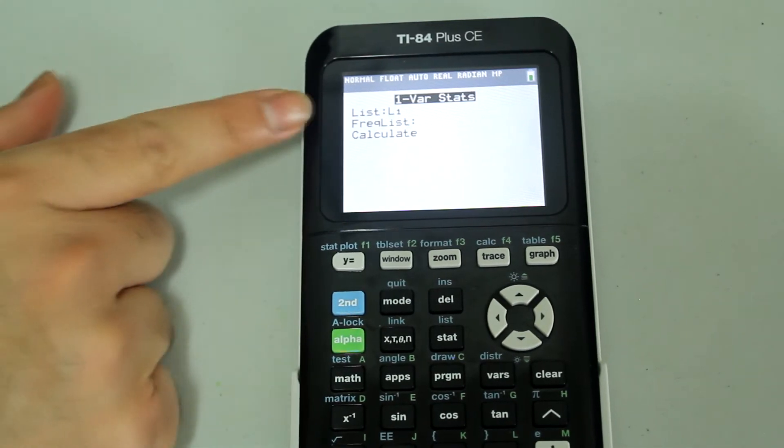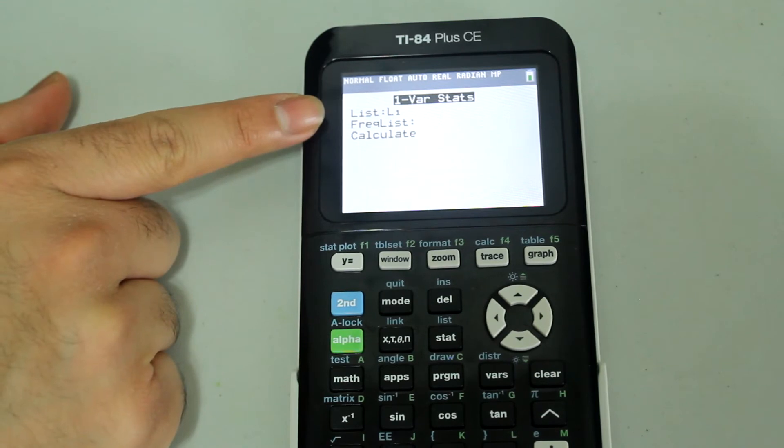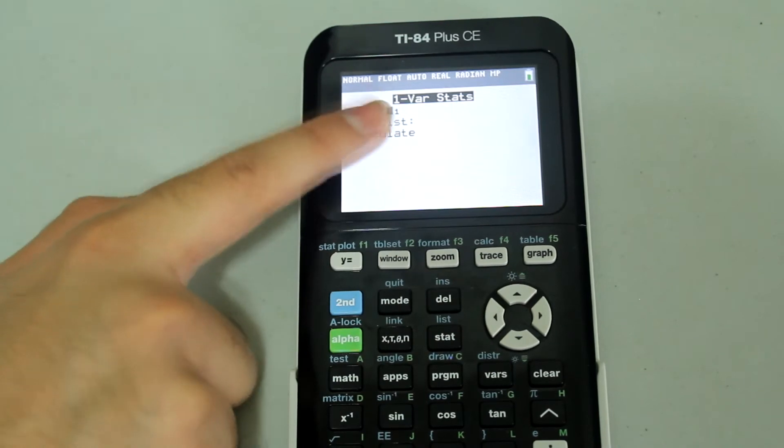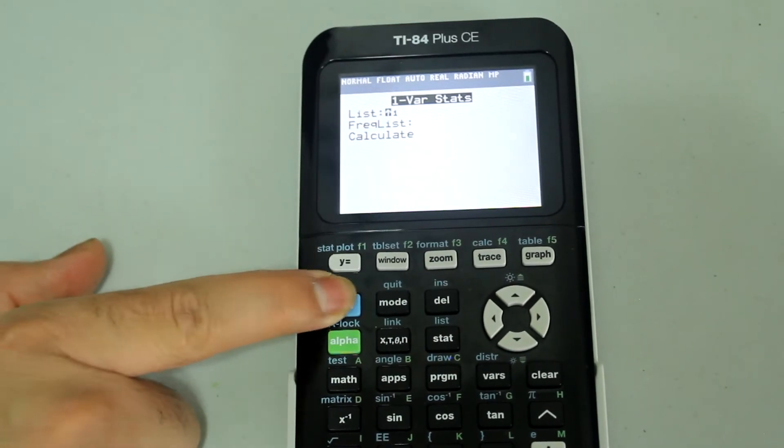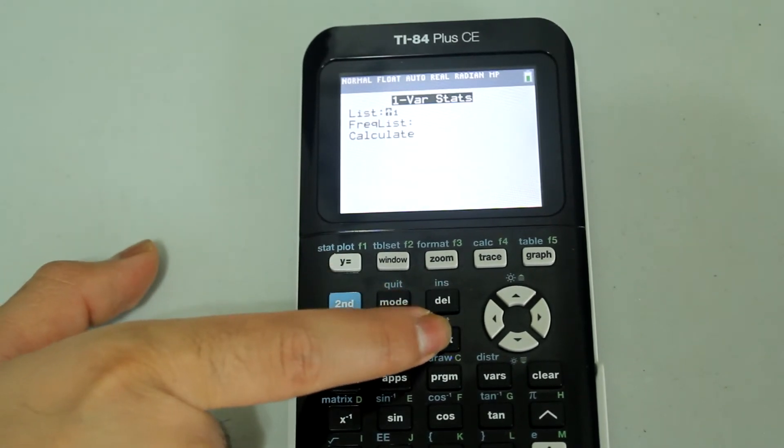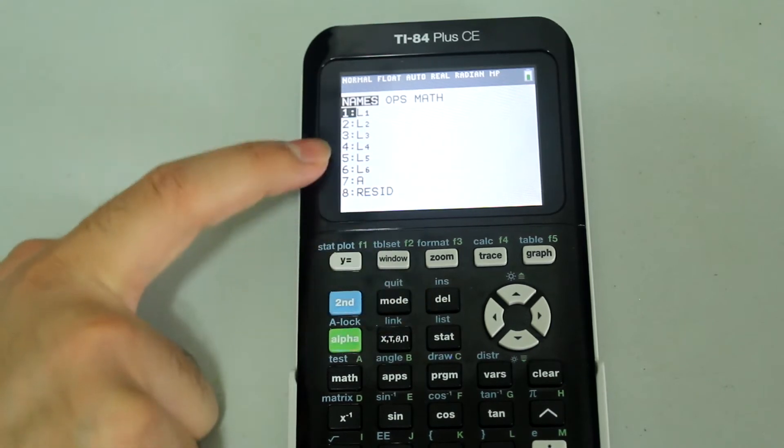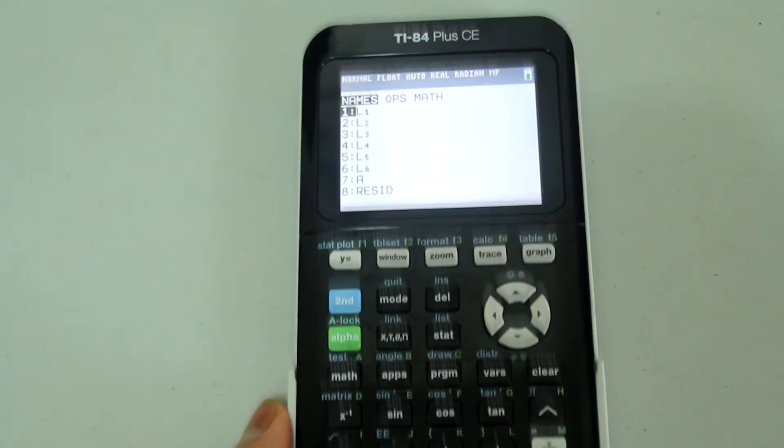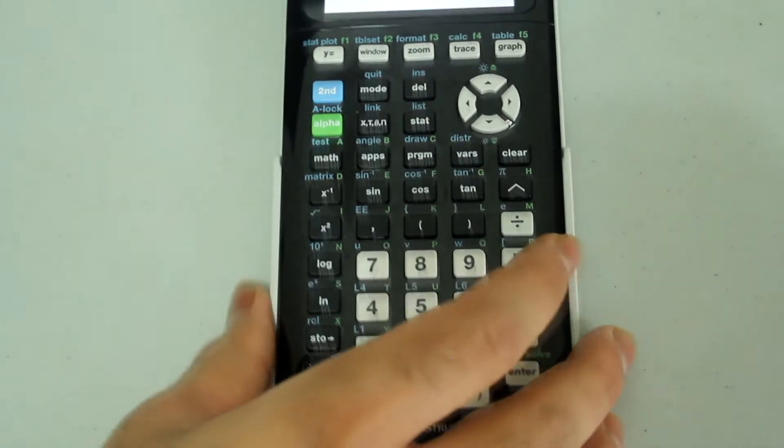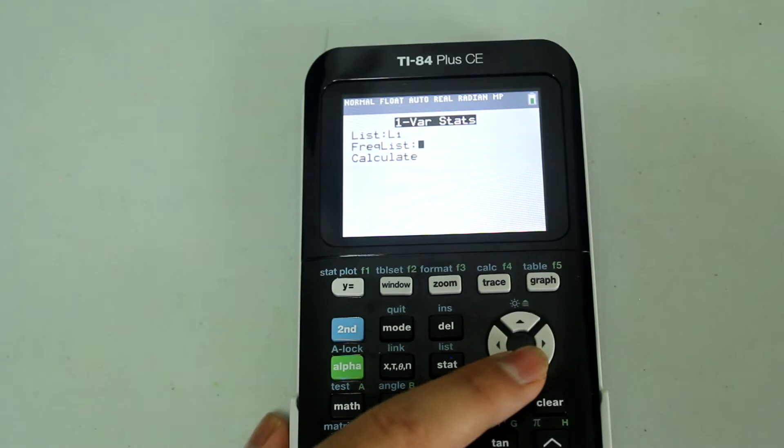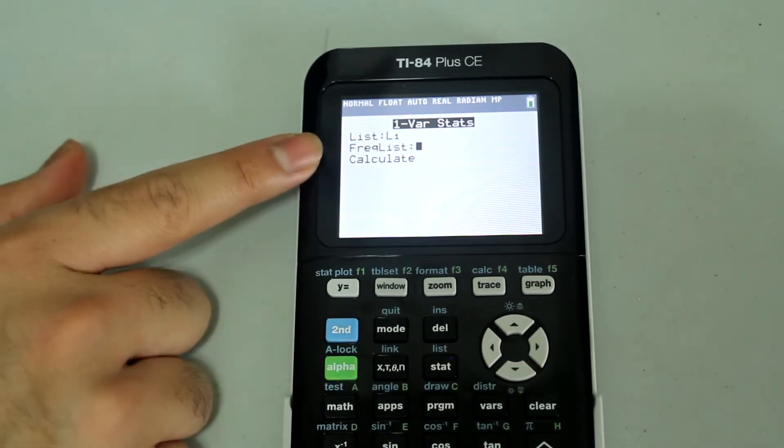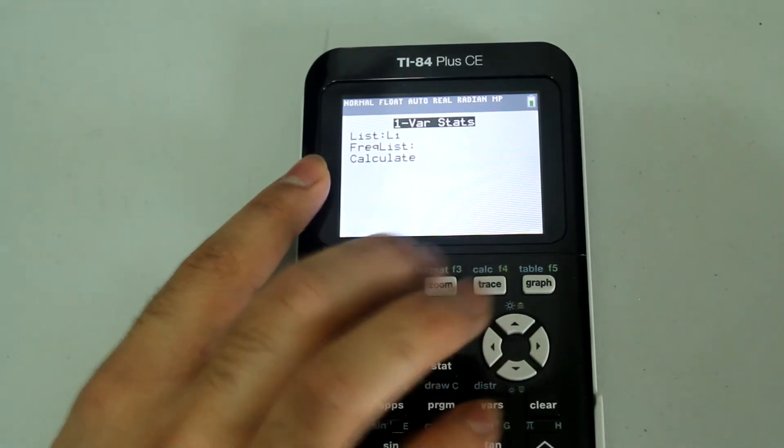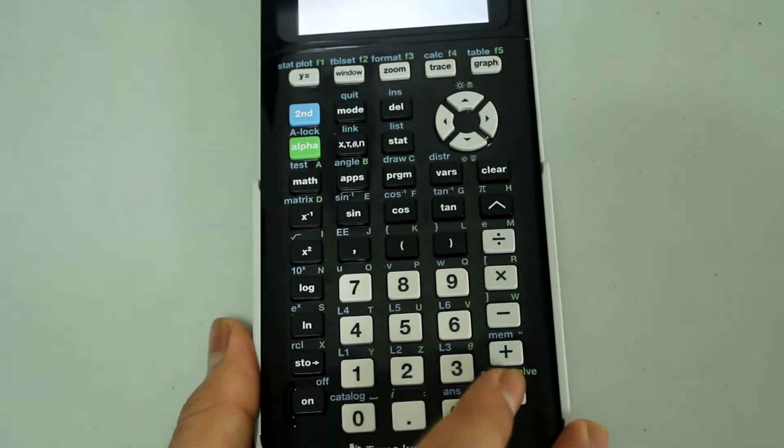Now, my list that I am interested in is L1. If you wanted to change that, just arrow over to L1 and press second and the stat button to select list, and then list titles come up. I am going to leave mine at L1, so just press enter. The frequency list, we don't have a frequency list, we'll work with this in just a little bit. Finally just arrow down, once the cursor is on calculate, just press enter.